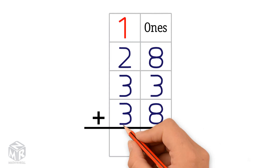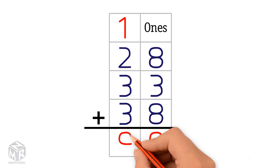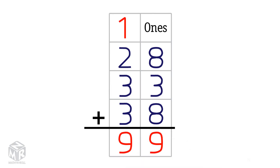Now we add the tens. 1 plus 2 plus 3 plus 3 equals 9. So 28 plus 33 plus 38 equals 99.